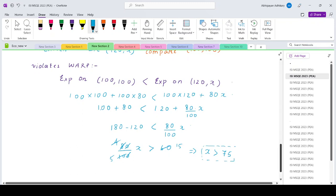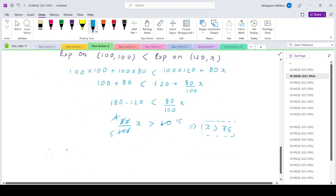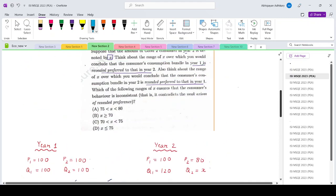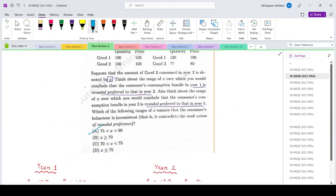So we want both these situations to hold. Therefore, if we combine both these ranges, we basically get 75 less than x less than 80, which is basically if you compare with your options, it is option number A. Thank you.